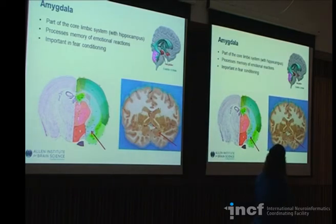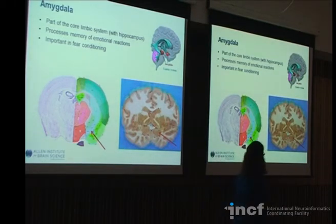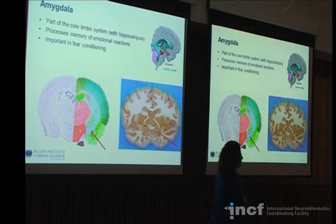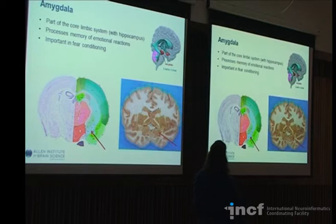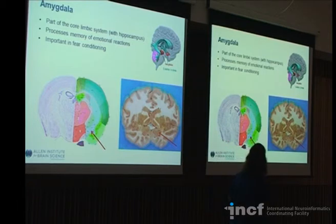And then finally, the last subcortical structure we'll talk about — though this is not a complete list — is the amygdala. It is the sister component to the hippocampus of the core limbic system and is involved in processing memory of emotional reactions. It's been shown in mice to be important in fear conditioning.